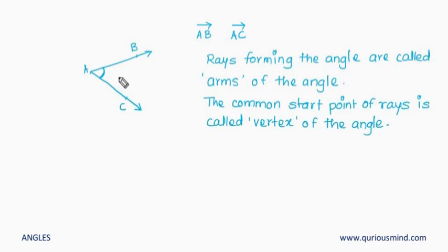Now how do we name this angle? This angle sometimes is named as angle A, but that is not the most appropriate method. Why? I will explain to you here.